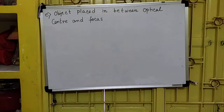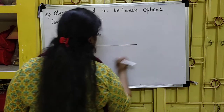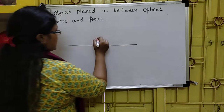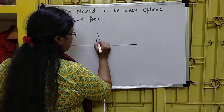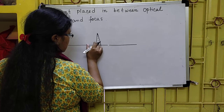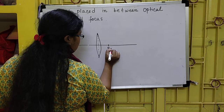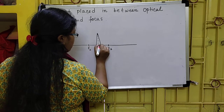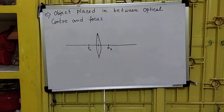So if you are keeping your object in between optical center and focus, let's see what is happening. Draw our principal axis. Here draw a thin lens. This is the optical center. Suppose this is 0.5 cm on each side. F2 on this side, F1 on the other side. If you are keeping your object in between optical center and focus, what is happening?